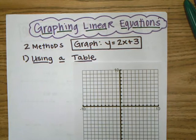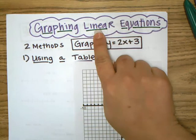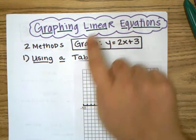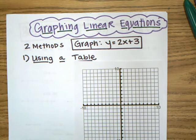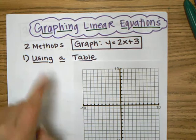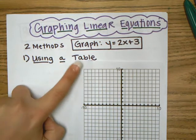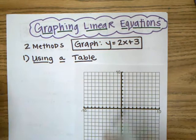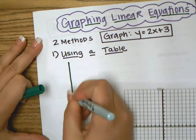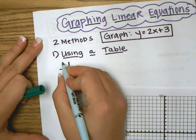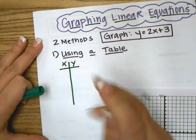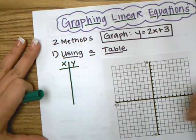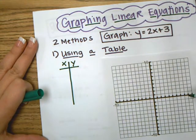This lesson is on graphing linear equations. Linear means line. There are two methods when graphing. Method one involves using a table. To graph using a table, pick at least three values for x.